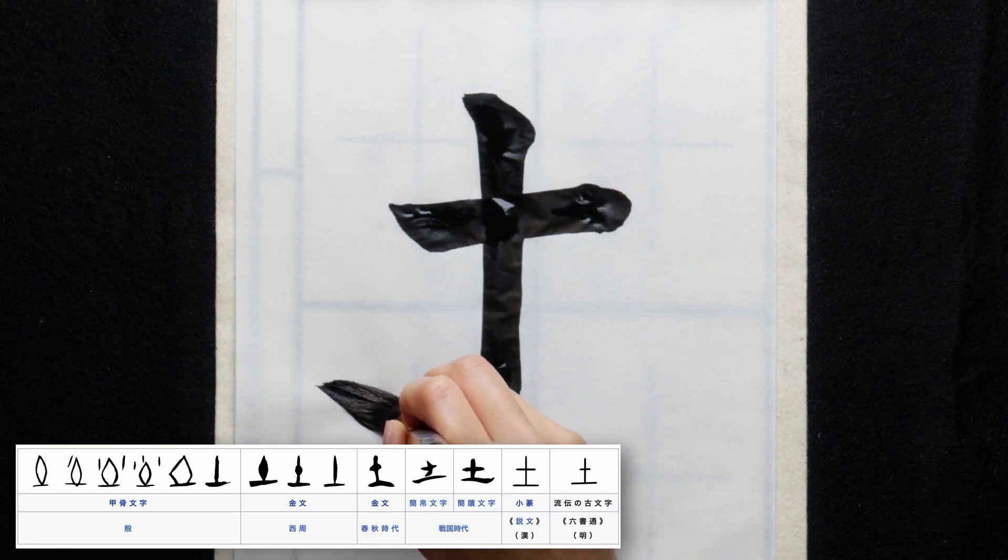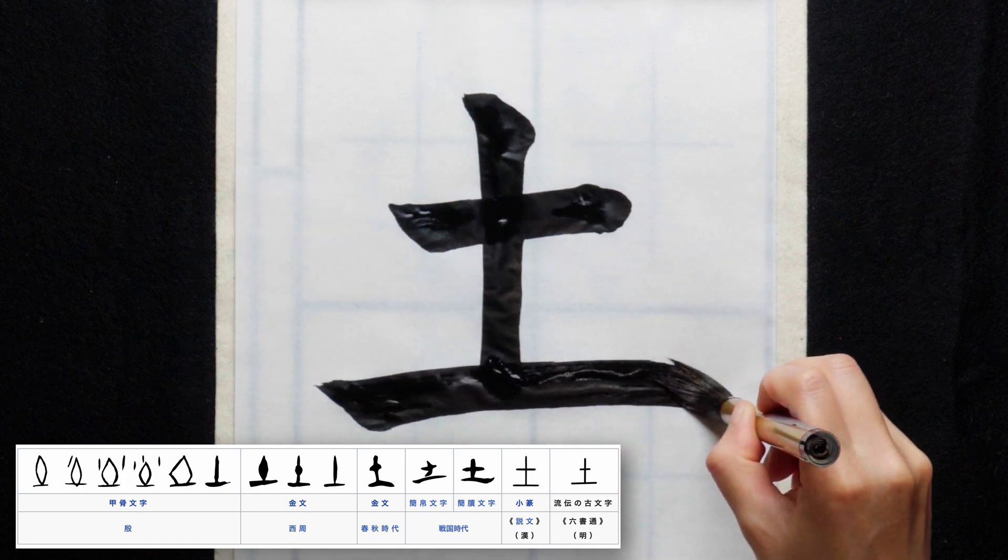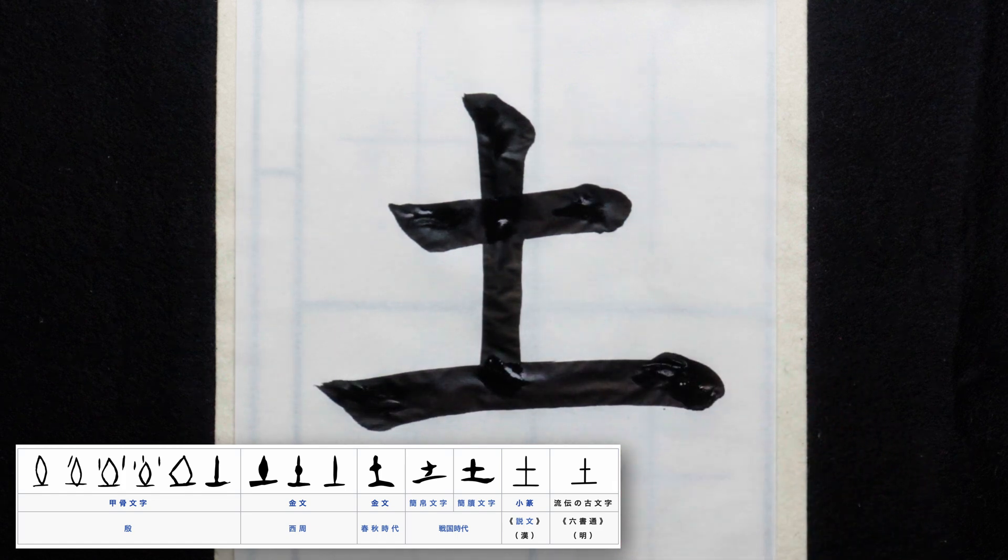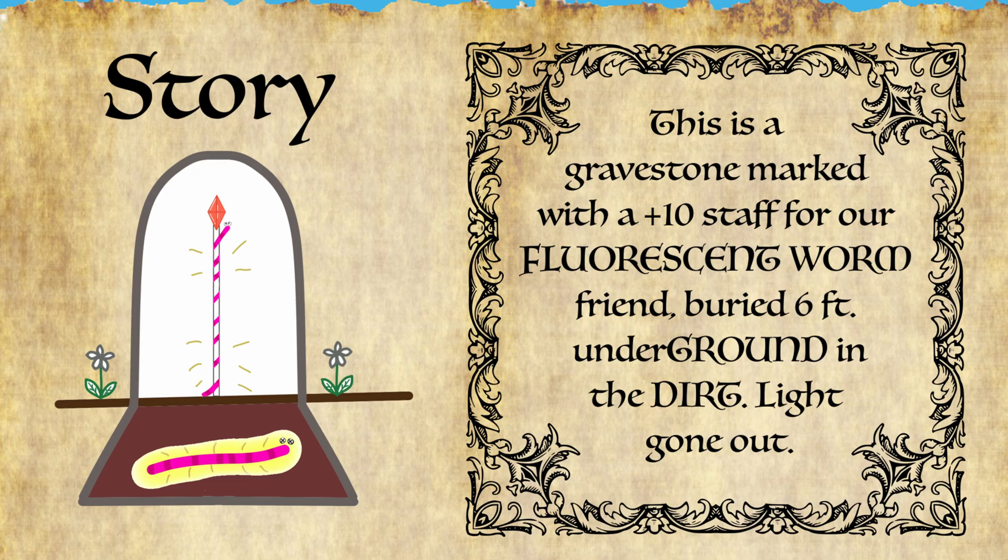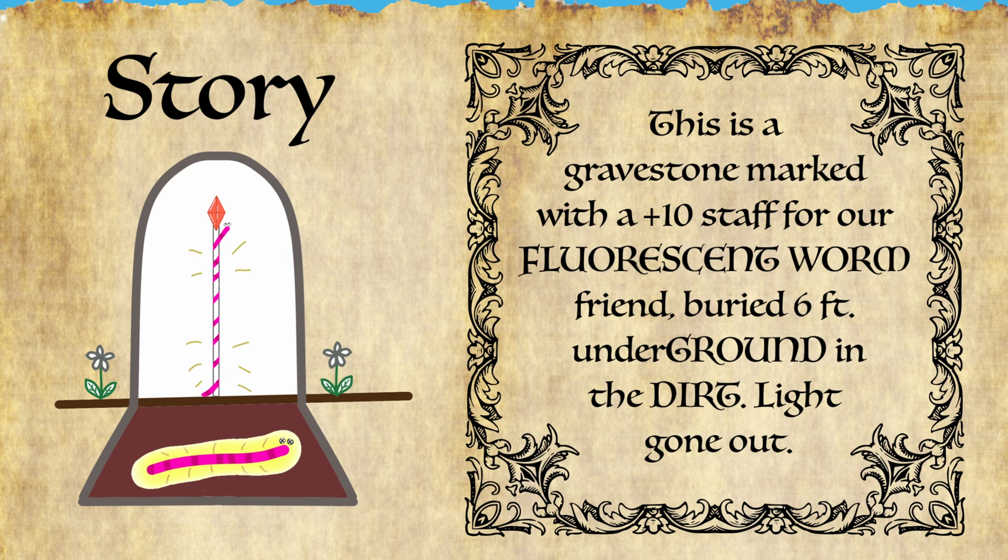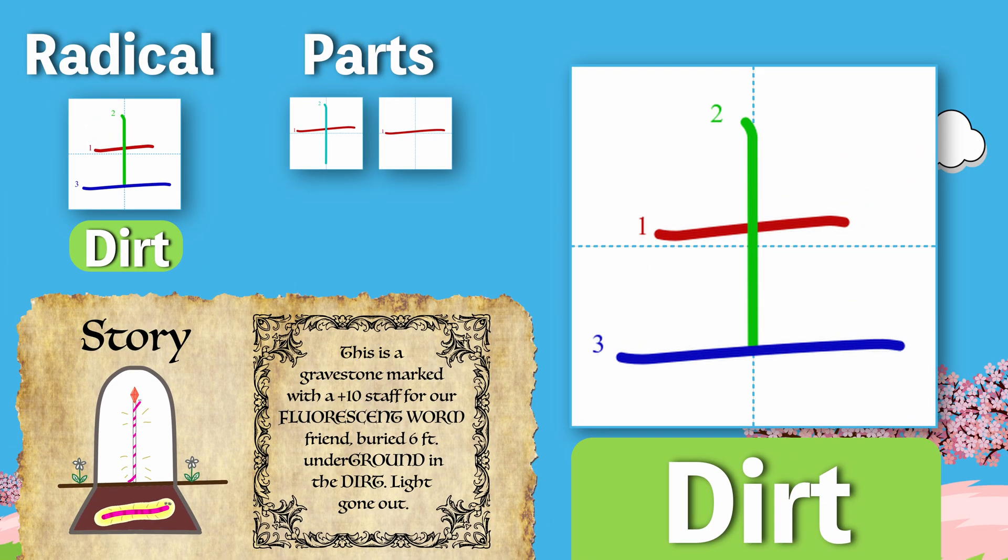Historically this was apparently supposed to look like dirt piled up on the ground. I don't see it. Do you? Let me know in the comments. Our story for dirt is: this is a gravestone marked with a plus ten staff for our fluorescent worm friend, buried six feet underground in the dirt. Light gone out.